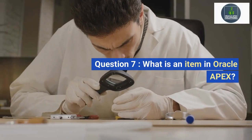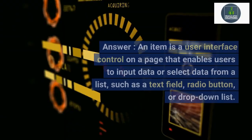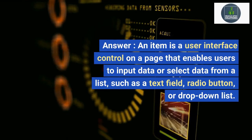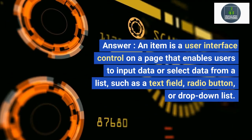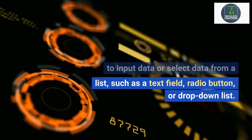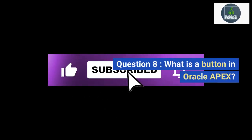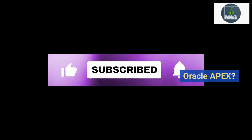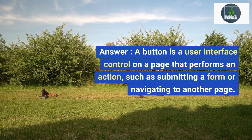Question 7: What is an item in Oracle APEX? Answer: An item is a user interface control on a page that enables users to input data or select data from a list, such as a text field, radio button, or drop-down list. Question 8: What is a button in Oracle APEX? Answer: A button is a user interface control on a page that performs an action, such as submitting a form or navigating to another page.